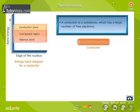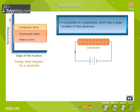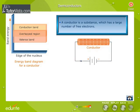A conductor is a substance which has a large number of free electrons. When potential difference is applied across a conductor, the free electrons move from the negative terminal to the positive terminal of the supply, constituting electric current. Conductors allow the flow of electric current through them.